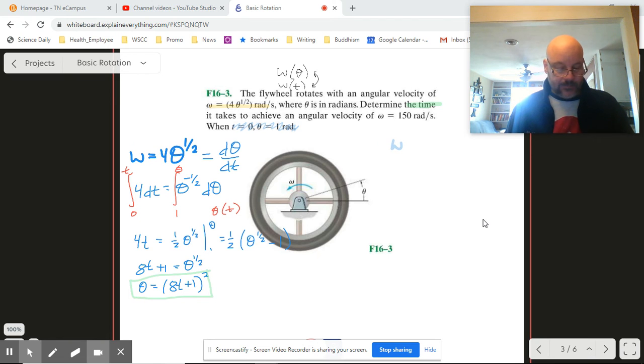So omega is 4 square root of theta. So we're going to have 4 times the square root of 8t plus 1 squared.